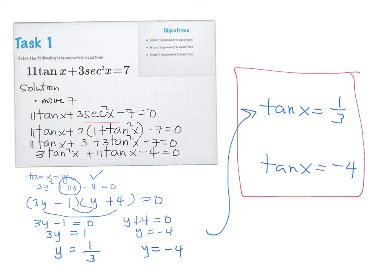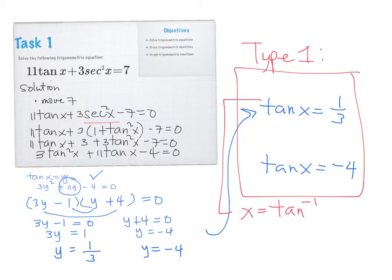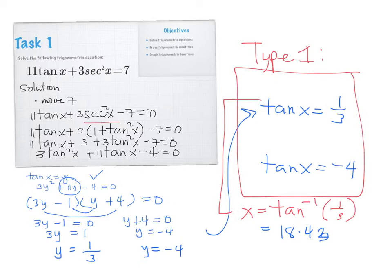Now we return to tangent X. So tangent X equals 1/3 and tangent X equals negative 4. These are like Type 1 questions. To find X, we use inverse tangent. So X equals tangent inverse of 1/3. The principal value from the calculator is 18.43 degrees, and that is one of the answers within 0 to 360 degrees.